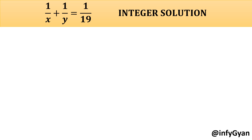Hello everyone, welcome to Infigyan. Today we are going to solve one problem of Olympiad for which we have to find the integer solution. The equation is 1 over x plus 1 over y is equal to 1 over 19.